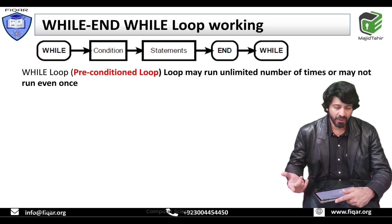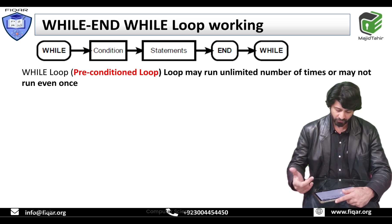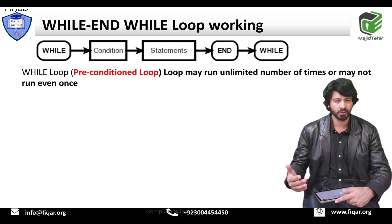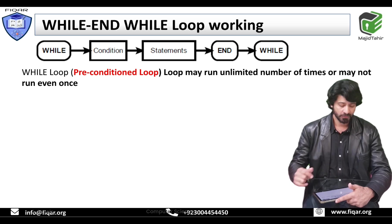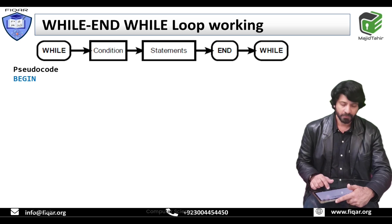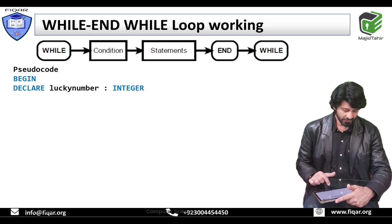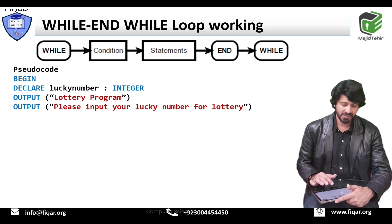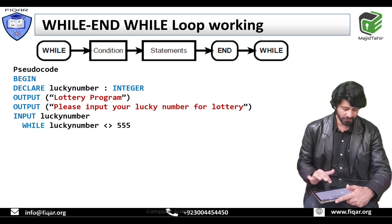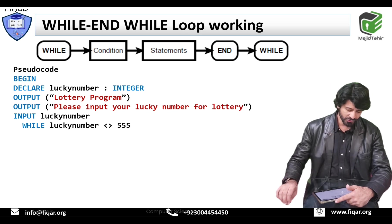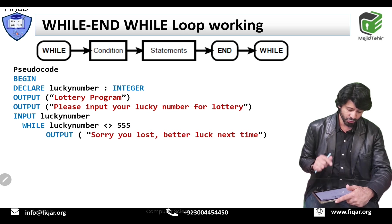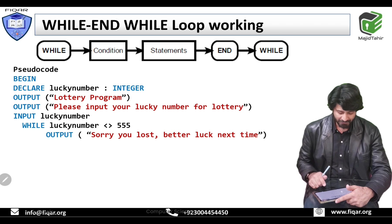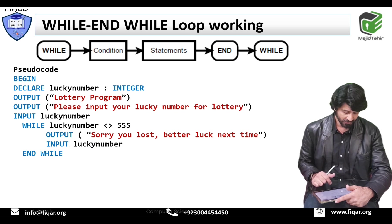We are looking at another program of while loop — the precondition loop. The loop may run an unlimited number of times if the user keeps making the condition true, or the loop may never run. In this pseudocode: declare lucky number as integer. Output: lottery program. Prompt: please input your lucky number for the lottery, and input lucky number. While lucky number is not equal to 555 — if it is not equal to 555, the program says sorry you lost, better luck next time, and asks the user to input the lucky number again. End while.